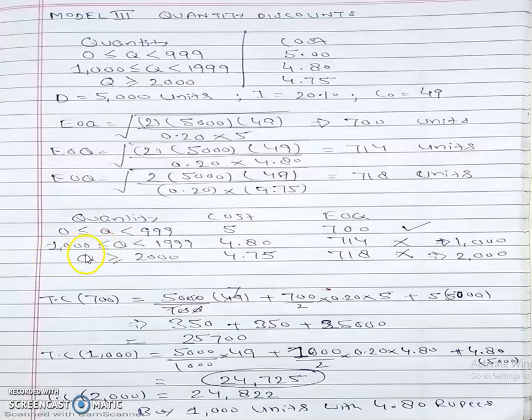Where the equality holds, we take that value. Here, equality holds at 1,000, so Q equals 1,000. For the third case, EOQ is 718 units, but order quantity must be greater than 2,000. We take where equality holds, which is 2,000. So we have three ordered quantities.